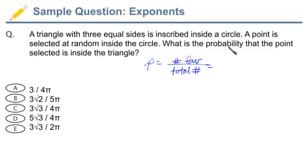Well, the question's asking, what is the probability that it will be inside the circle? Or, sorry, inside the triangle, so the favorable outcomes, the numerator, is going to be whatever's inside the triangle.